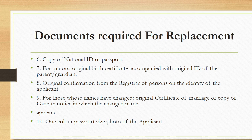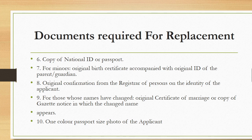Because you realize at some point people normally finish their high school maybe at 16 or 17 years. Some finish very early. So you need to have an original birth certificate. Also, the original confirmation from the registrar of persons on the identity of the applicant. Number nine, if you have changed your status or even your name — we see people change things in between — you have to go and obtain a gazette notice. And then you also need one color passport-size photo of the applicant. Those are the key documents required to successfully replace your KCP or KCC certificate.